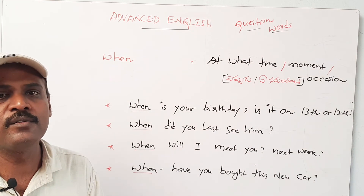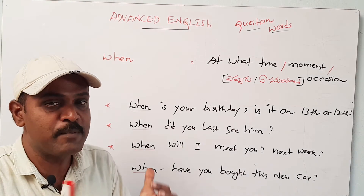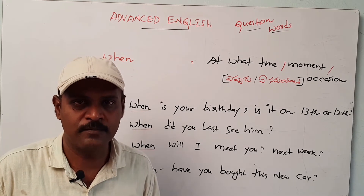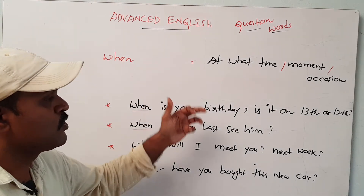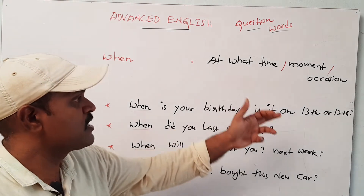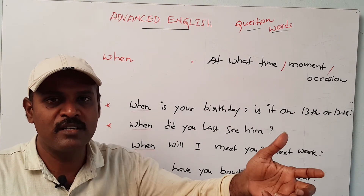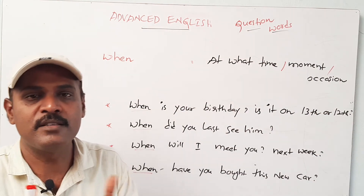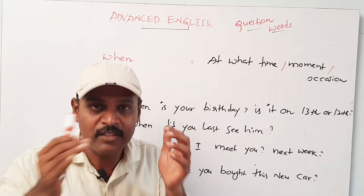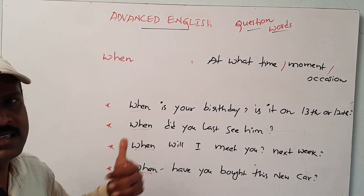Okay friends, this is part one of question words. Every question word can be used in different contexts, in different ways, and different parts of speech. The next word is 'when'. Usually 'when' refers to a particular time — at what time, at what moment, at what occasion, at what situation, at what circumstances. Something is going on, something will happen, something happened in the past — at that point of time we use the question word 'when'.